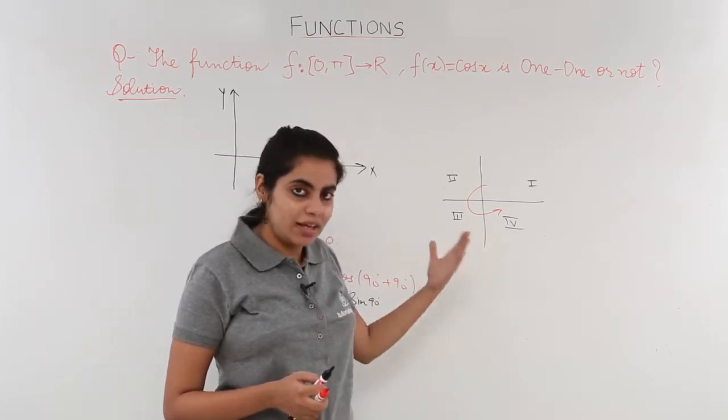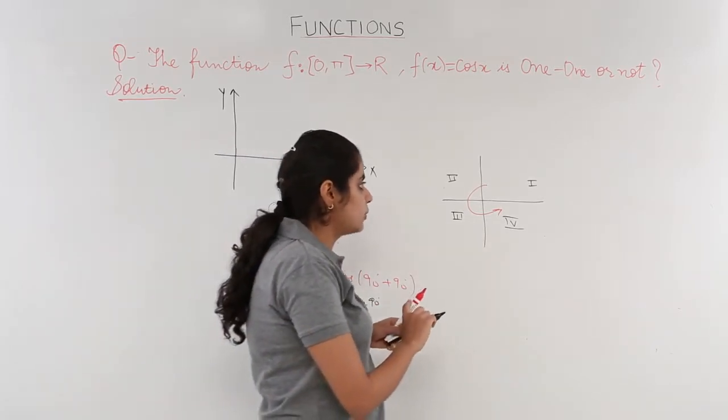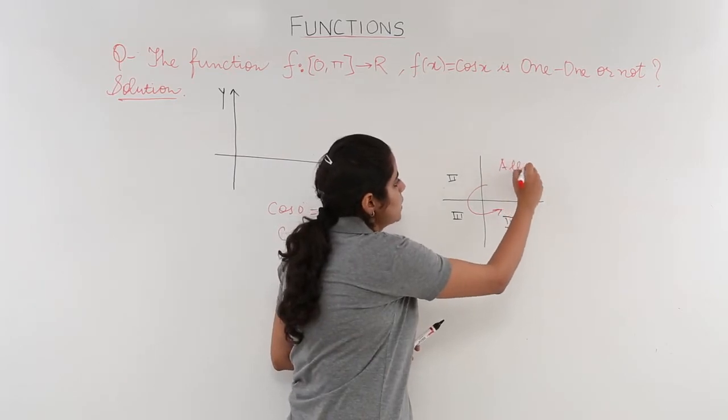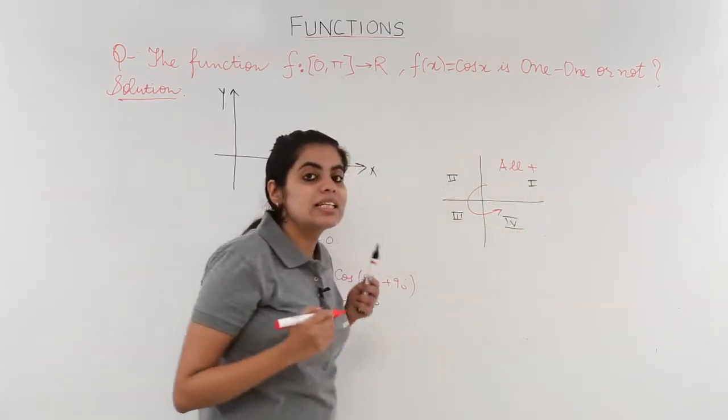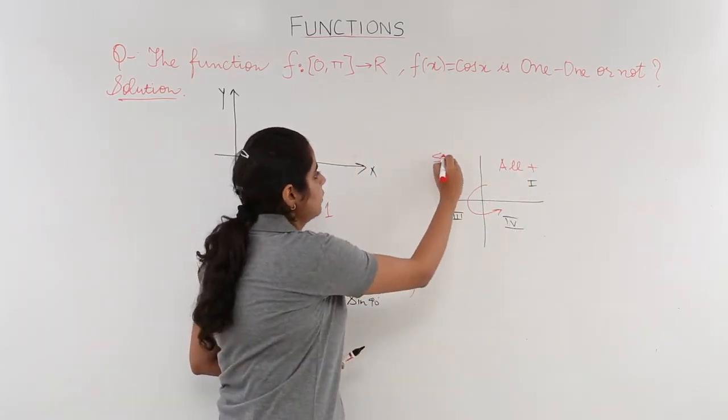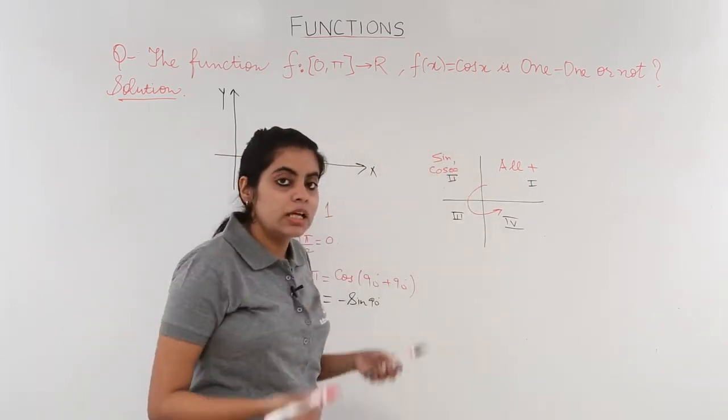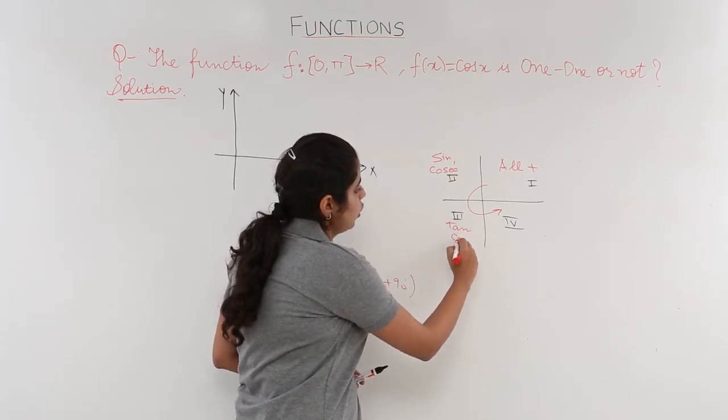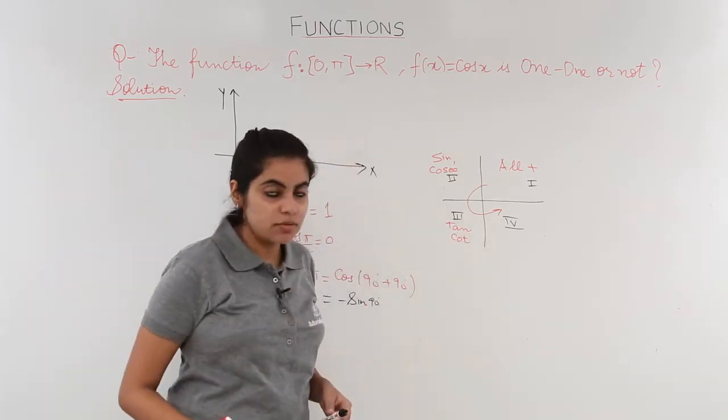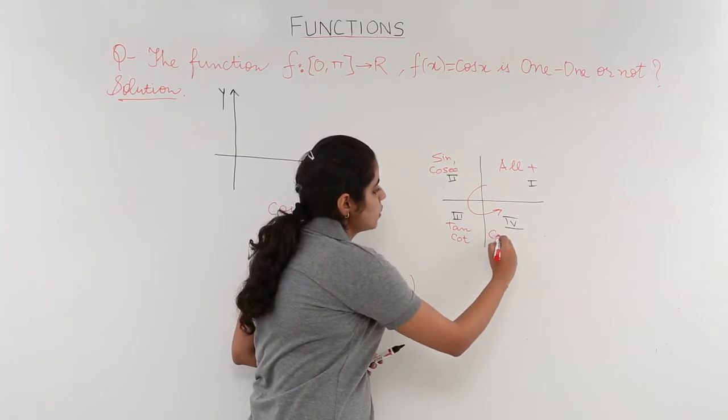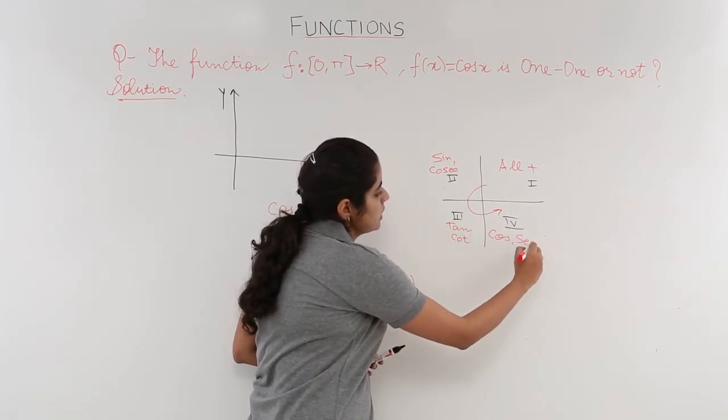I write it for you also in this diagram. The first quadrant will have all positive. The second has sine and cosec positive. The third has tan and cot positive, and the fourth has cos and sec positive.